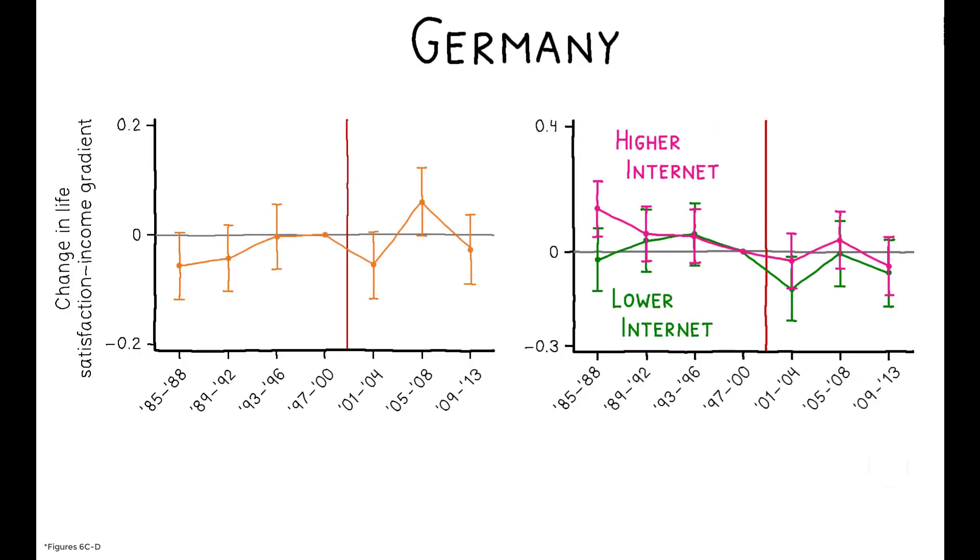Moreover, the same analysis reveals no change in the happiness-income gradient in Germany over the same period. Thus, the changes in Norway cannot be attributed to shocks, such as the dot-com burst, or the growth of IT, that were common to both countries.